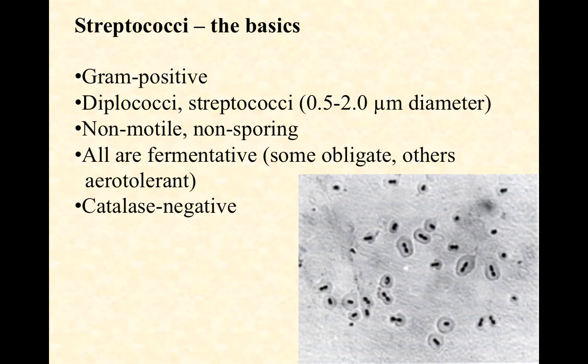So what are some basics about the streptococci? Obviously, they're gram-positive cocci — spherical-shaped cells. They live as either diplococci or streptococcal chains. You can see in the picture in the bottom right these are encapsulated diplococci, and you can see the capsule around the diplococcus. Like most cocci, they're between half and two microns in diameter, and they are non-motile and non-spore-forming.